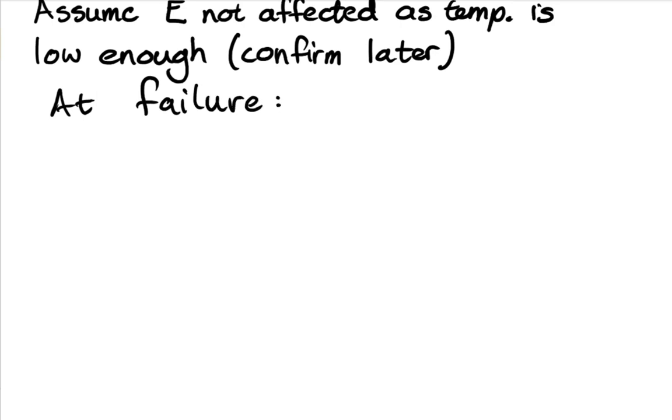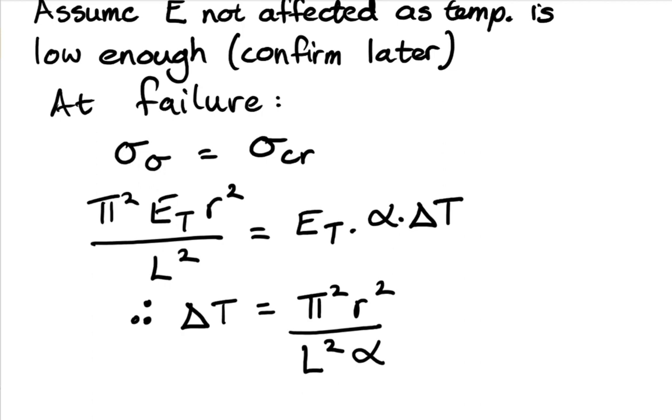So now at failure we can now equate this all together. If we have a look at this now we've got the mechanical stress is equal to our critical buckling stress. So it's expanded enough to exert the failure stress. So pi squared times E_T, r squared over L squared, equals Young's modulus, coefficient of thermal expansion, and change in temperature. A couple of these terms cancel out, giving us the change in temperature. So that's a useful equation that we can quickly look at what temperature increase is required to cause something to fail.